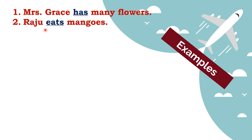Here Raju is performing an action of eating. 'Raju eats mangoes.' Hence 'eats' is an action - it is a verb depicting an action.